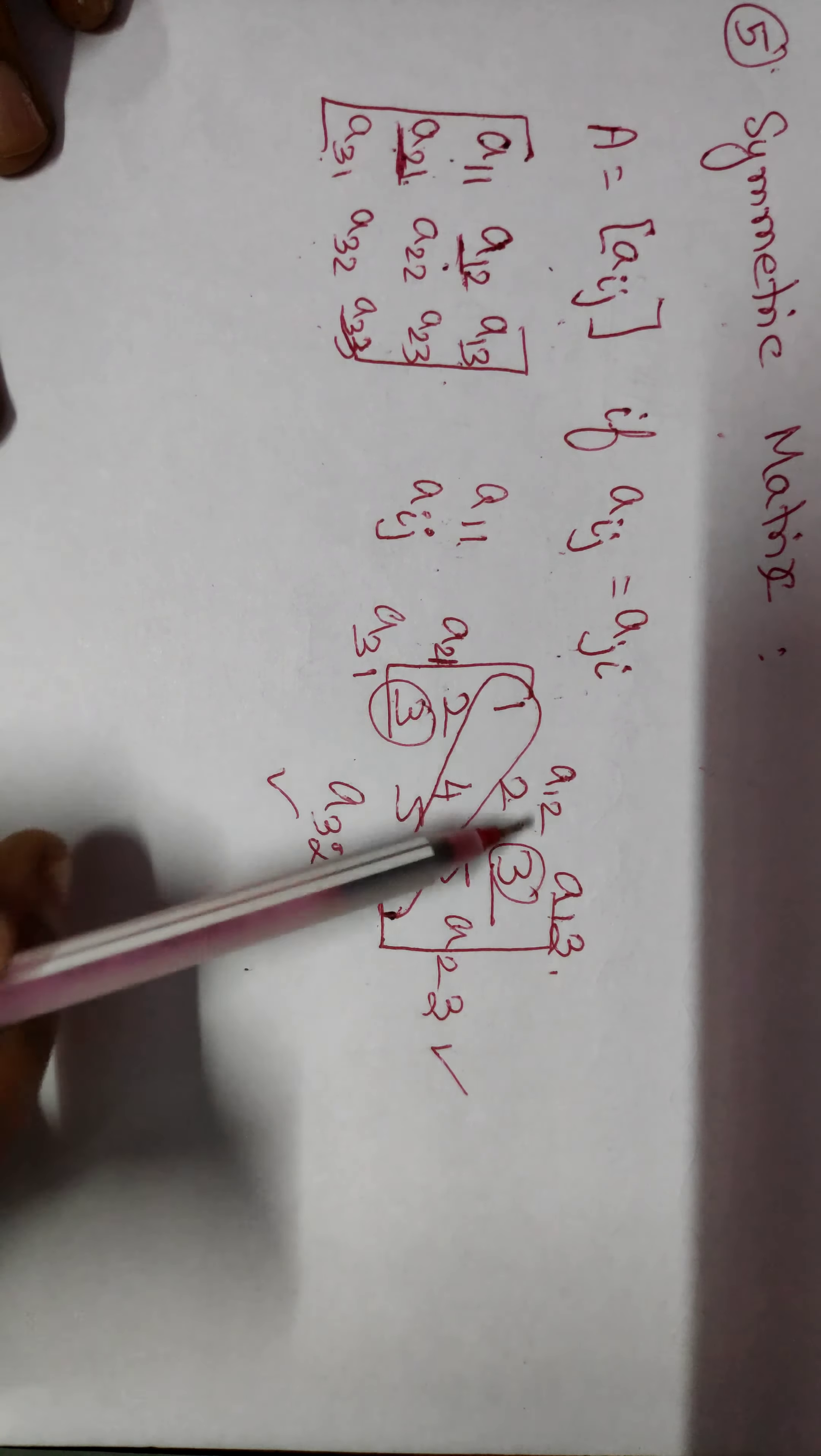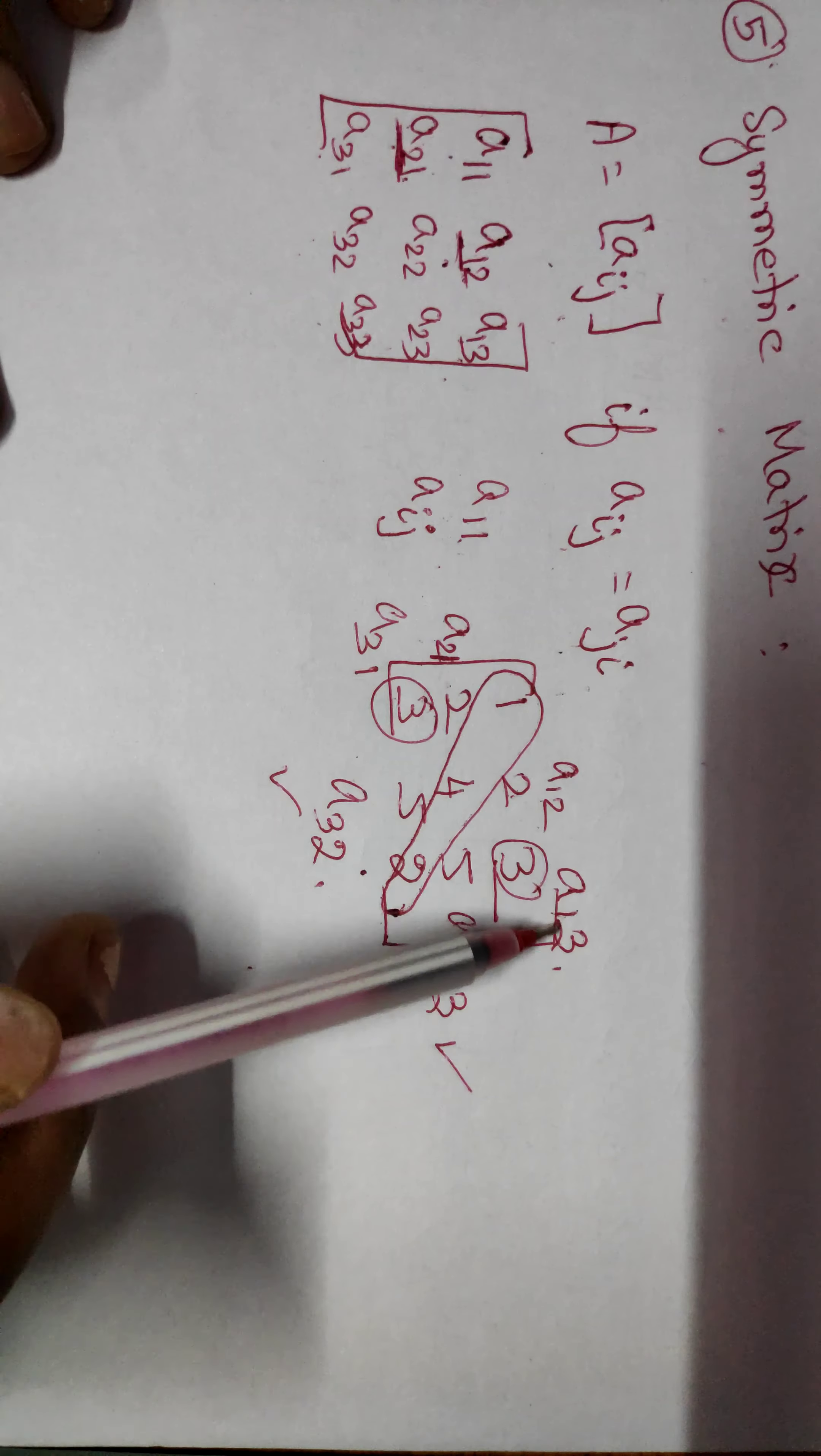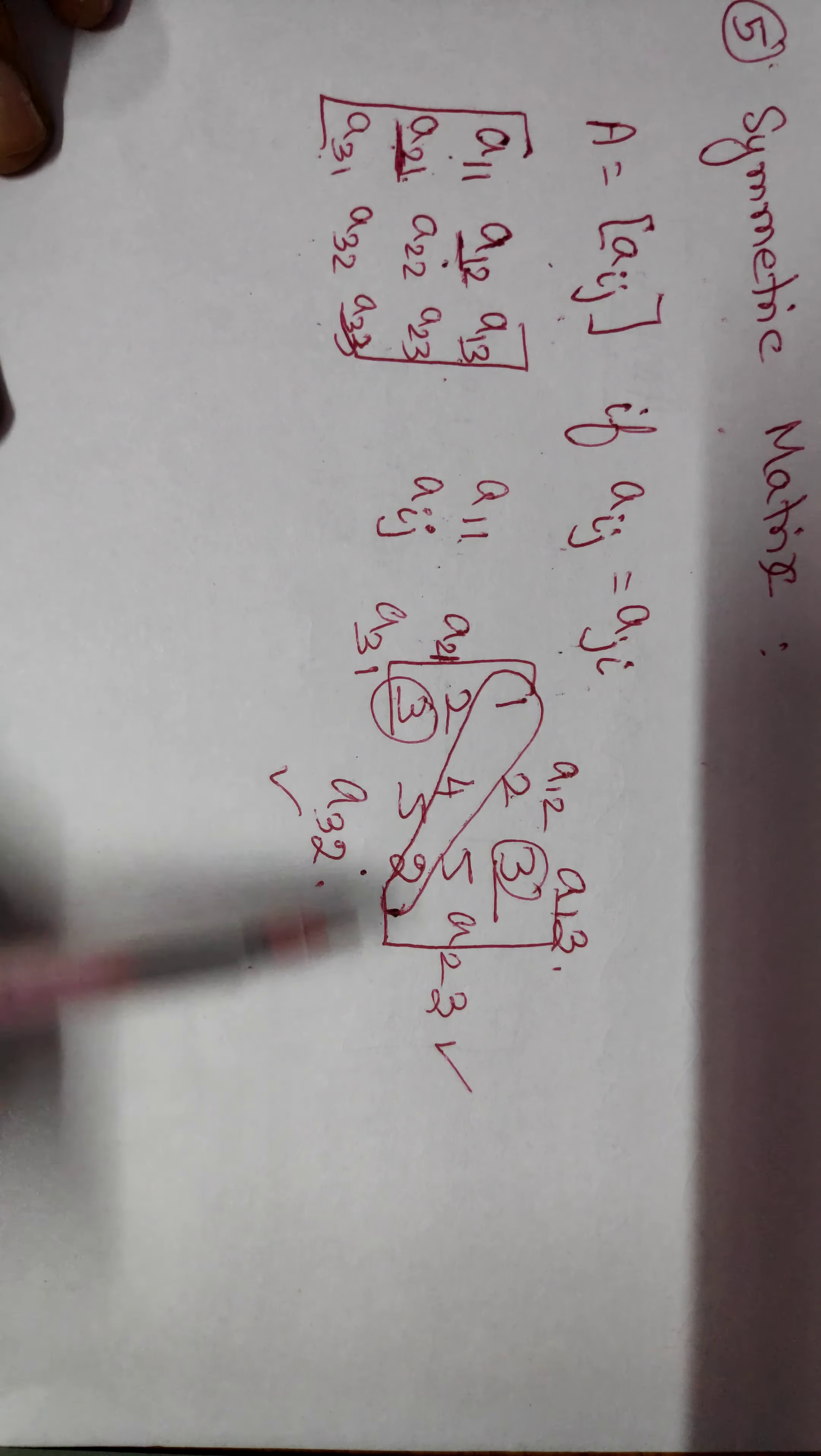Here, A12 equal to A21. Here, Aij value is interchangeable in 2, 1. This 12 is interchangeable in 2, 1. This 13 is interchangeable in 3, 1. This 23 is interchangeable in 3, 2.